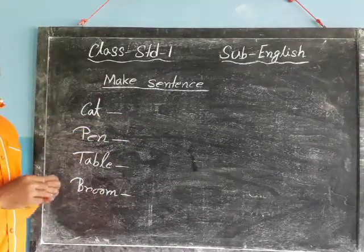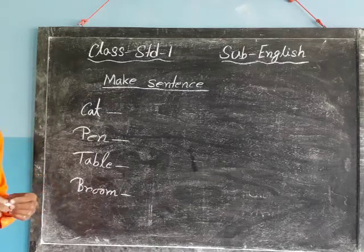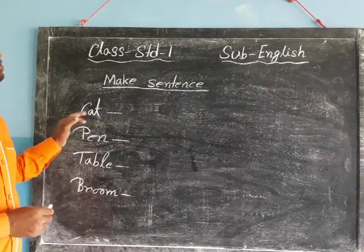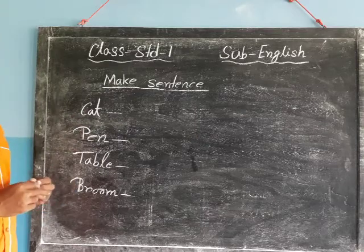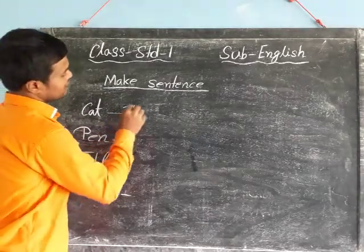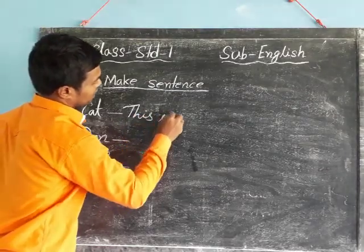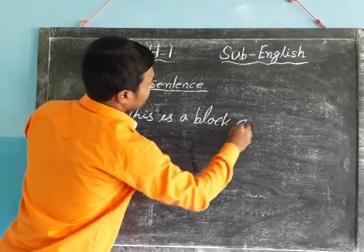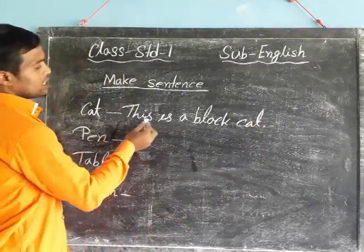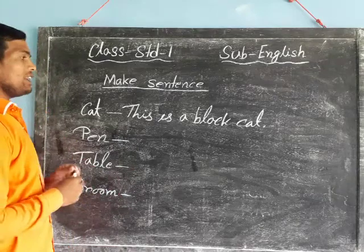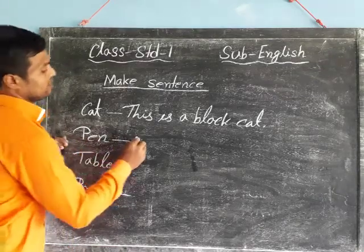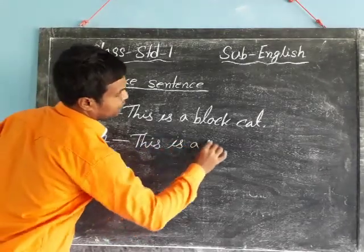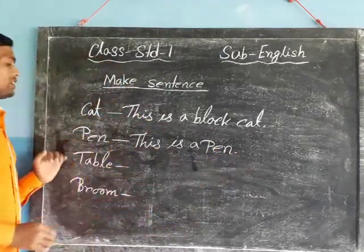Sentence. A sentence is a group of words that makes a complete sense. Cat. Make a sentence: This is a black cat. Pen. This is a pen.